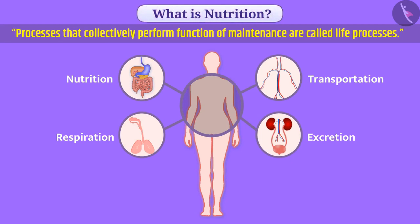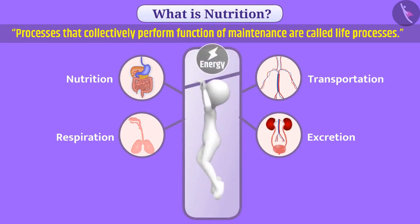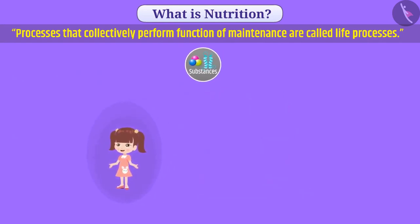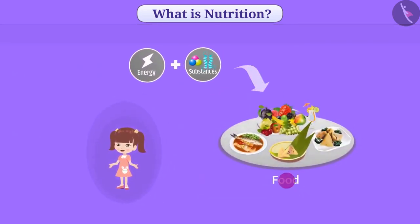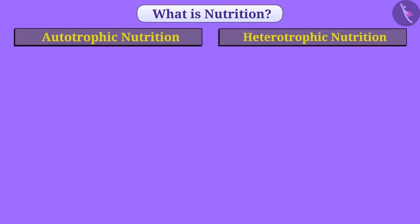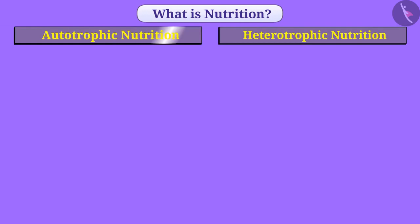Organisms need energy to perform various tasks and for necessary processes that maintain life. Along with this, various substances are also needed for growth of the body. Living organisms get energy and substances from food. The process of taking food inside the body is called nutrition. On the basis of the method of eating food, there are two types of nutrition: autotrophic nutrition and heterotrophic nutrition.